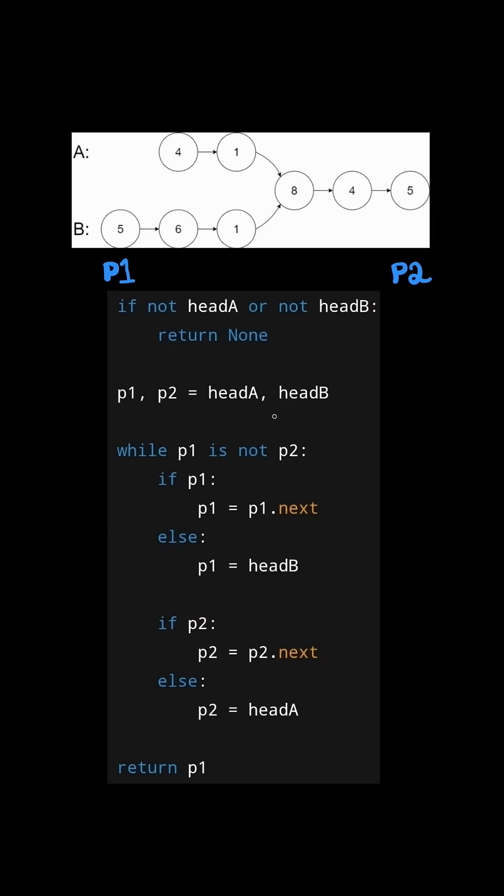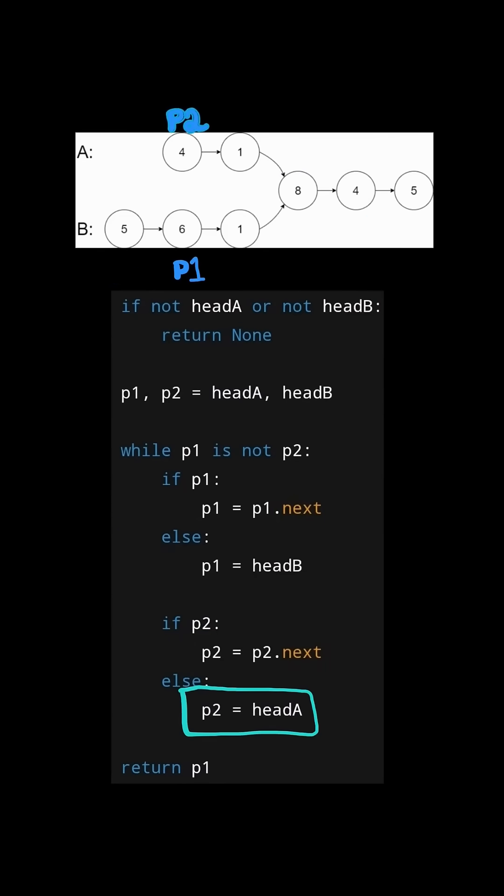Now notice P1 points to 5, but P2 is null. So they're not equal, so we advance P1, and set P2 to the head of list A.